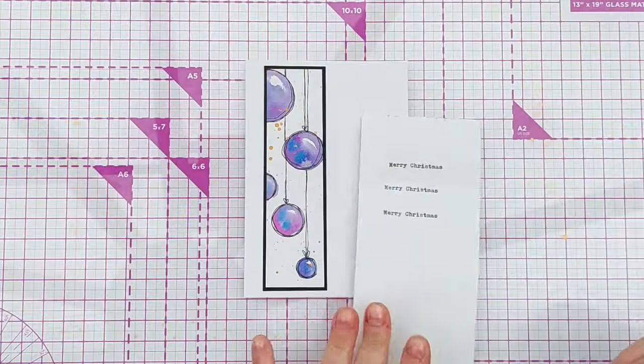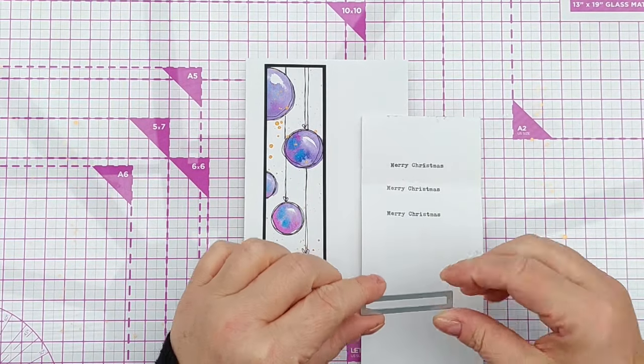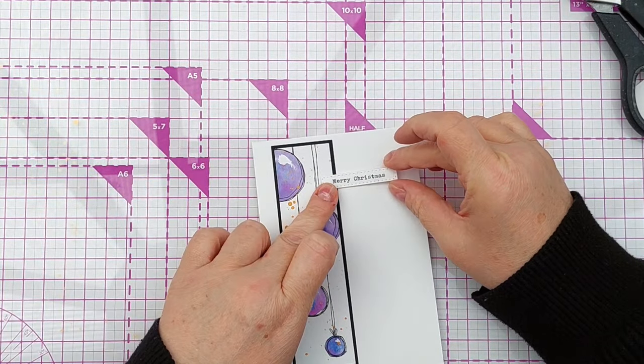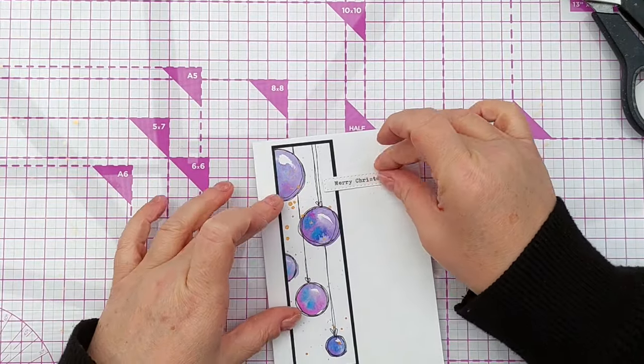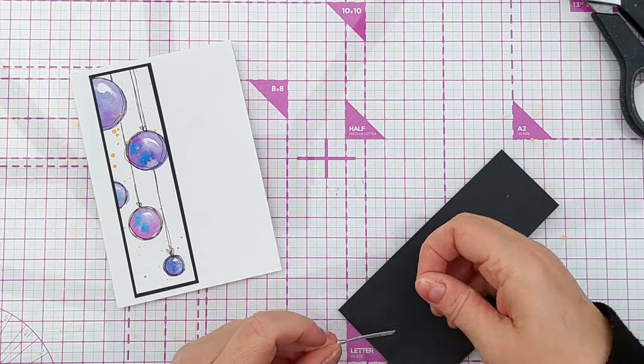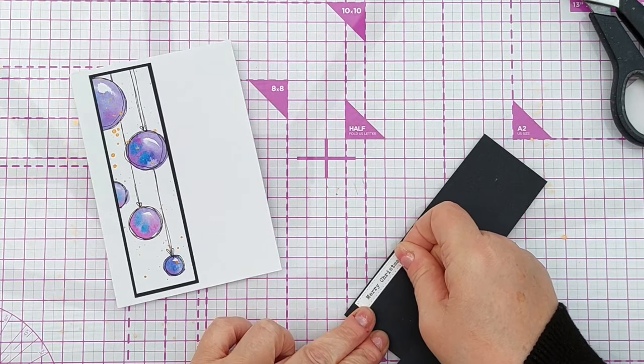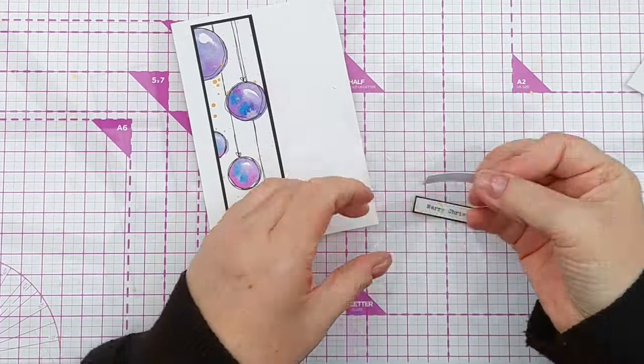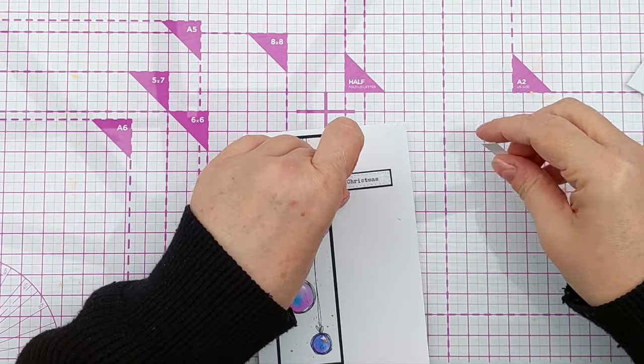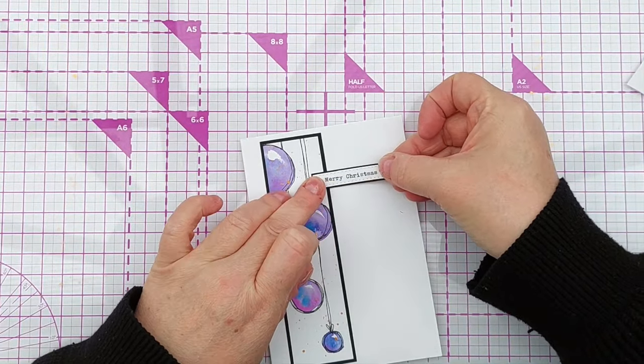I'm going to add a simple Merry Christmas, and I've typed it out using my typewriter. And I'm going to cut that out with this stitched rectangle die. And I could add this overlapping slightly like that. I wonder if it needs a black outline too, just a thin one. So I've cut another one of these to pop behind here, to lift it up a little bit where it's overlapping.